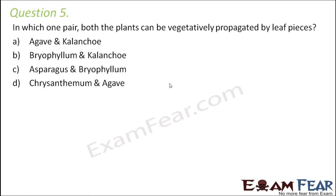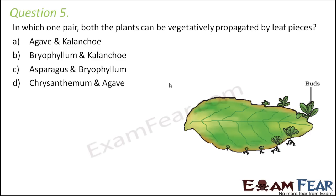One clear example is Bryophyllum, where adventitious buds are present in the leaves and new plants arise from these buds — a type of vegetative propagation. Bryophyllum and Kalanchoe are two examples where vegetative propagation happens by leaves, so option B is the right answer.